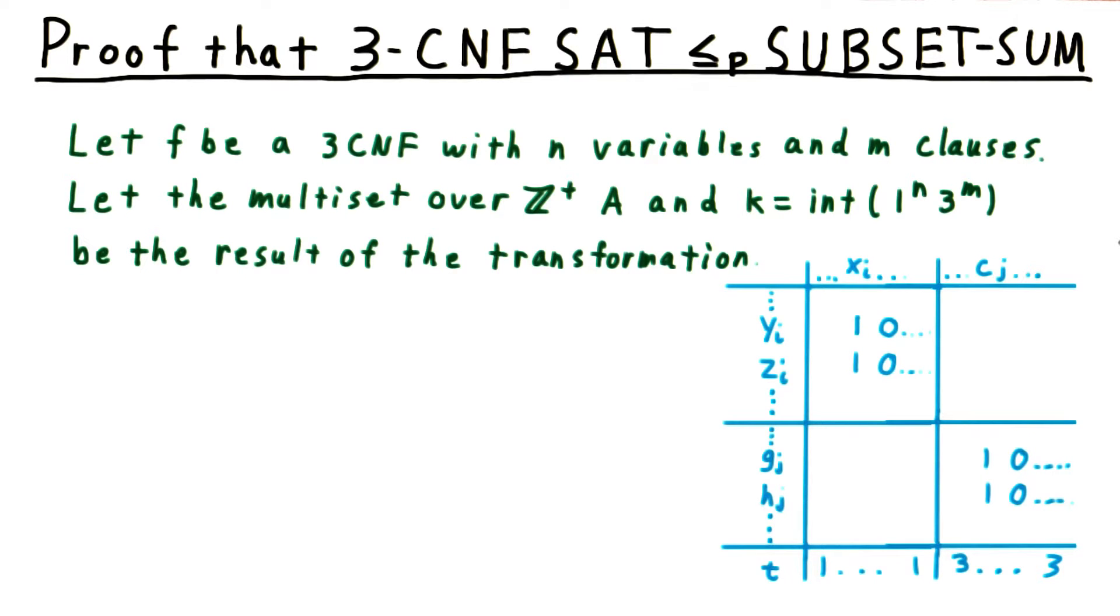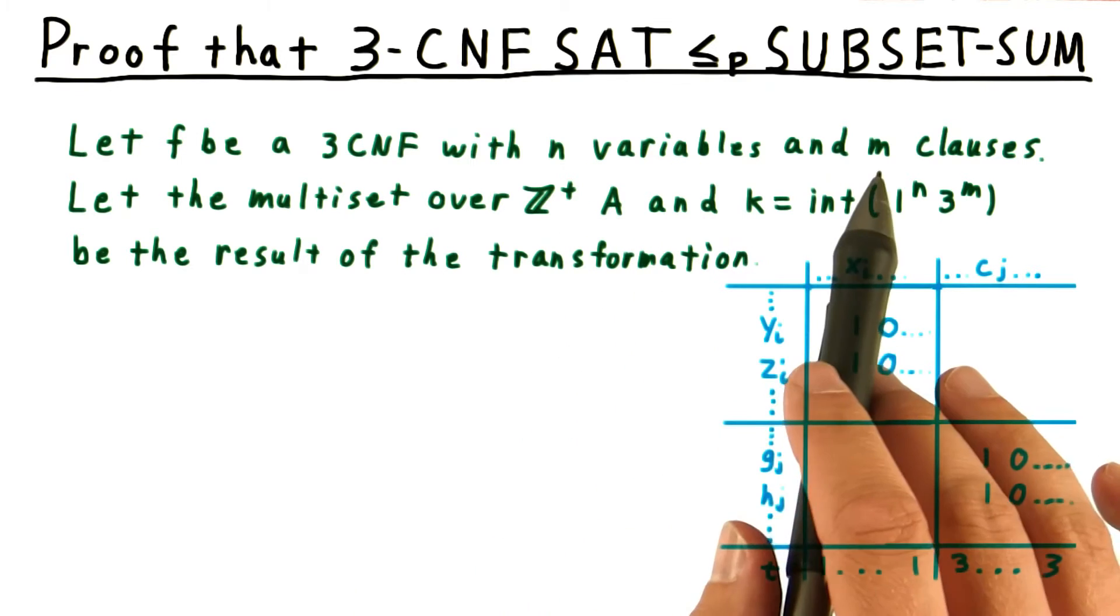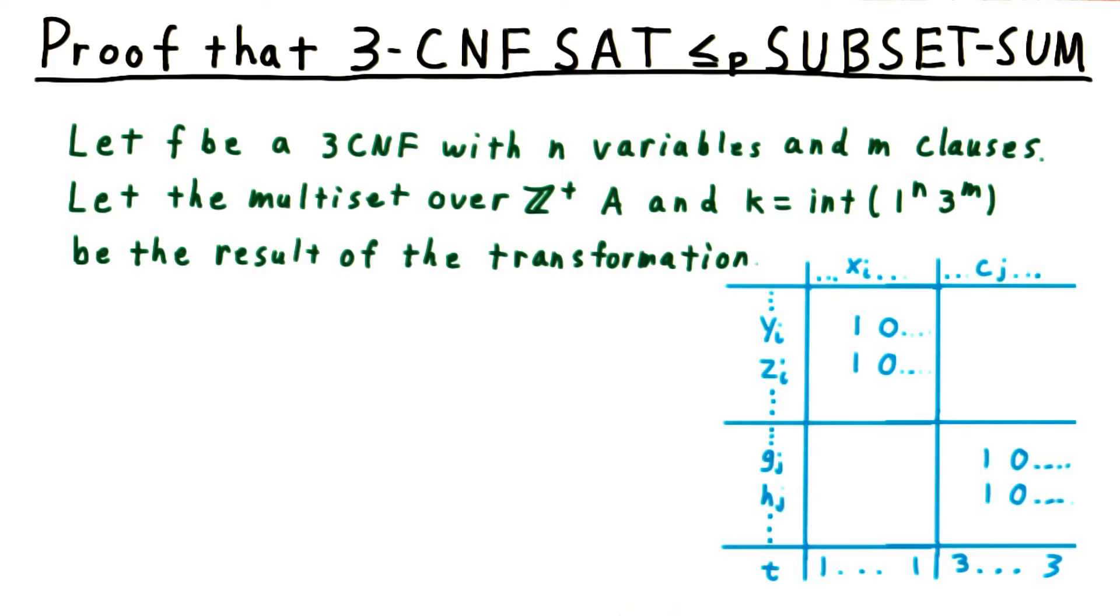Next, we prove that this reduction works. Let f be a 3CNF formula with n variables and m clauses. And we'll let A and k be the result of the transformation.